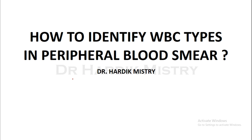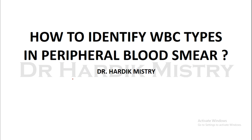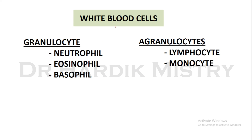Hello everyone. In this video I am going to explain how to identify WBC types in peripheral blood smear. White blood cells, or leukocytes, or in short form WBC. There are two types of WBC: granulocytes and agranulocytes. Neutrophil, eosinophil and basophil are the granulocytes, whereas lymphocyte and monocyte are the agranulocytes.